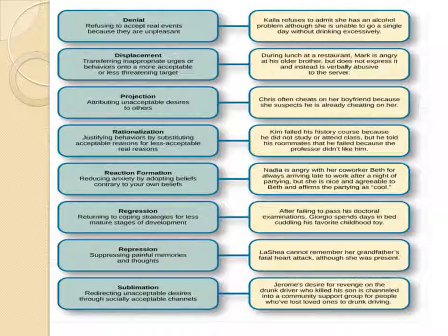Rationalization involves creating acceptable justifications for unacceptable behavior. For example, a student named Kim failed his history exam because he neither studied nor attended, but then told his friends: 'I knew everything, I just failed because the teacher doesn't like me.' He creates a justification for his failure — replacing the true unacceptable reason with a fabricated acceptable one.